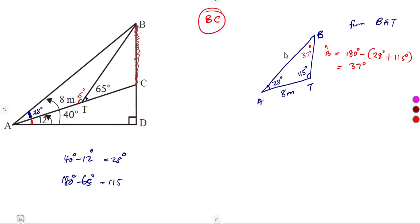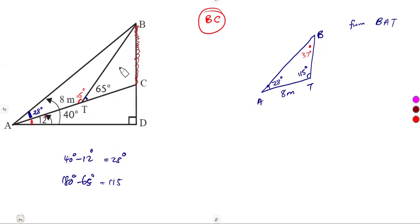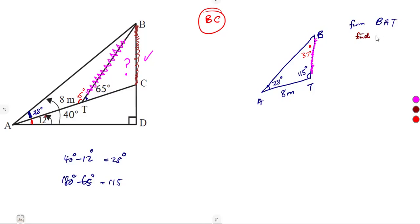Now that we have all the angles in triangle ABT, we can find the length of BT. We will use the sine rule to calculate BT, since we have an angle-to-unknown-side relationship paired with an angle-to-known-side relationship.